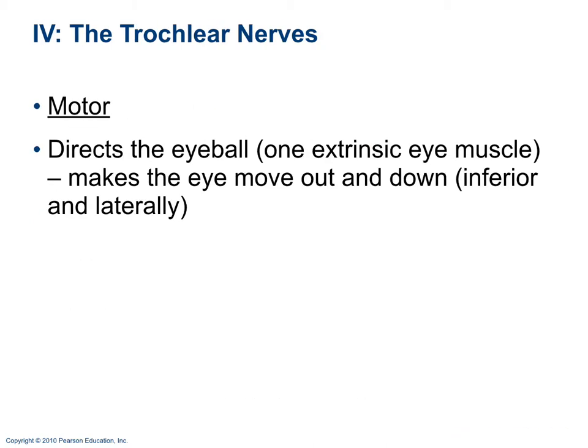Cranial nerve 4 is the trochlear nerve — motor. Remember these are pairs of nerves. The trochlear nerve directs one of the extrinsic eye movements, specifically moving the eye inferiorly and laterally.